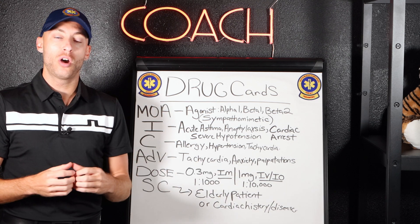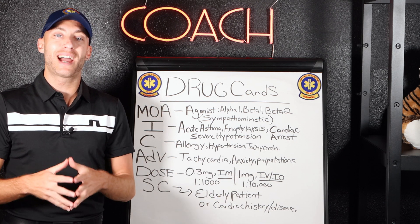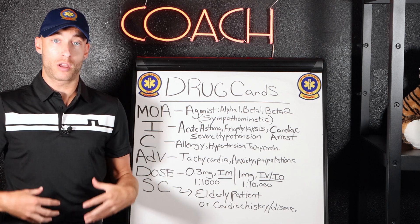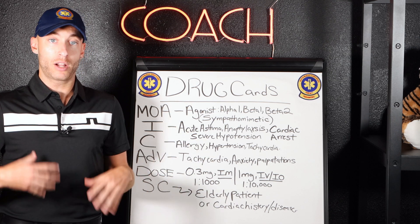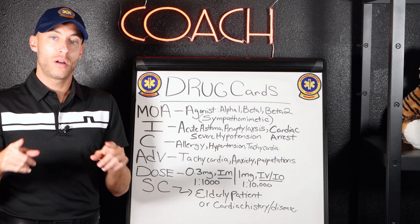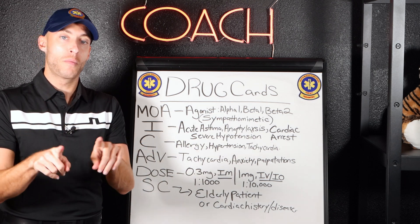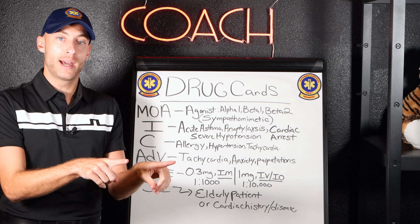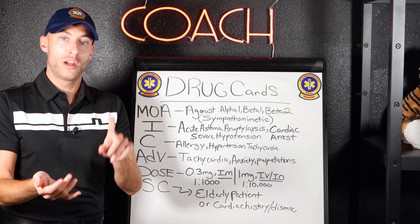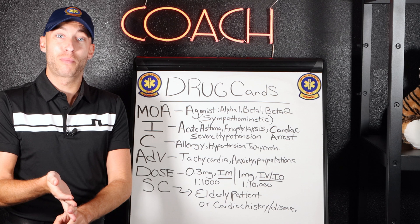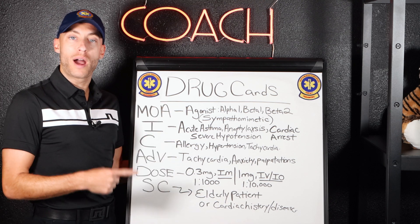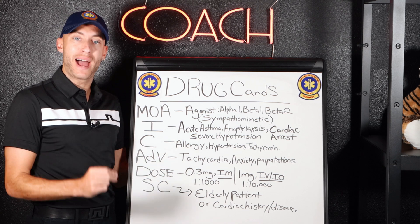Beta-2 is going to dilate — bronchodilate — open up the lung fields. Your bronchioles are going to open so you can breathe better. That's why epinephrine is a sympathomimetic. Your sympathetic nervous system activation gives you increased heart rate, increased blood pressure, and opening of the lungs. This drug mimics that activation of your sympathetic nervous system.